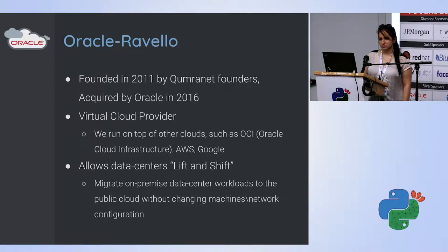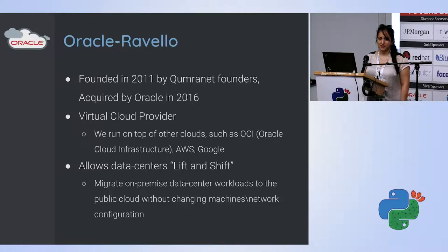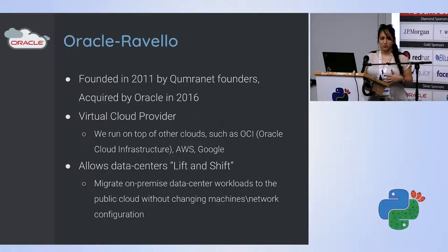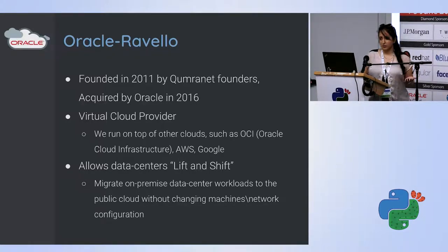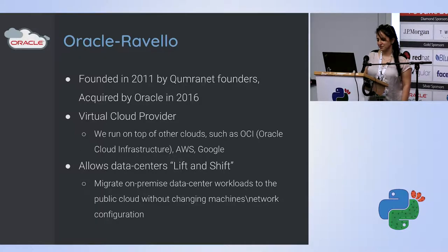Oracle Ravelo was founded by Kumranet's founders in 2011, and in 2016 it was acquired by Oracle. Basically what we do is we're a virtual cloud provider — we're a cloud provider but we run on top of other clouds. So that means Amazon's AWS, or Google's GCE, or of course Oracle's OCI — Oracle Cloud Infrastructure. So why is it good for, one might ask.